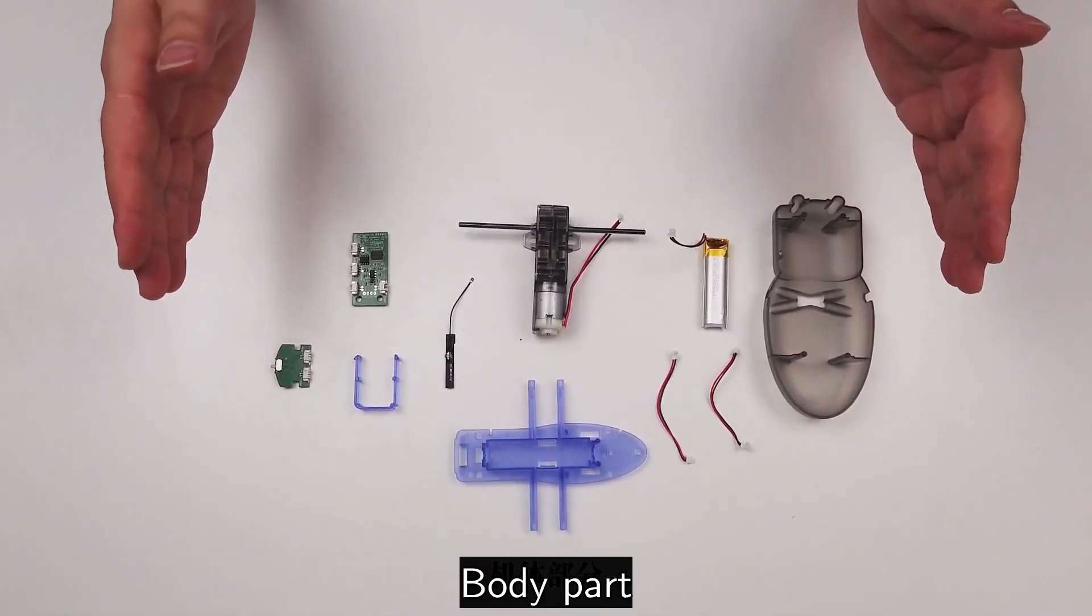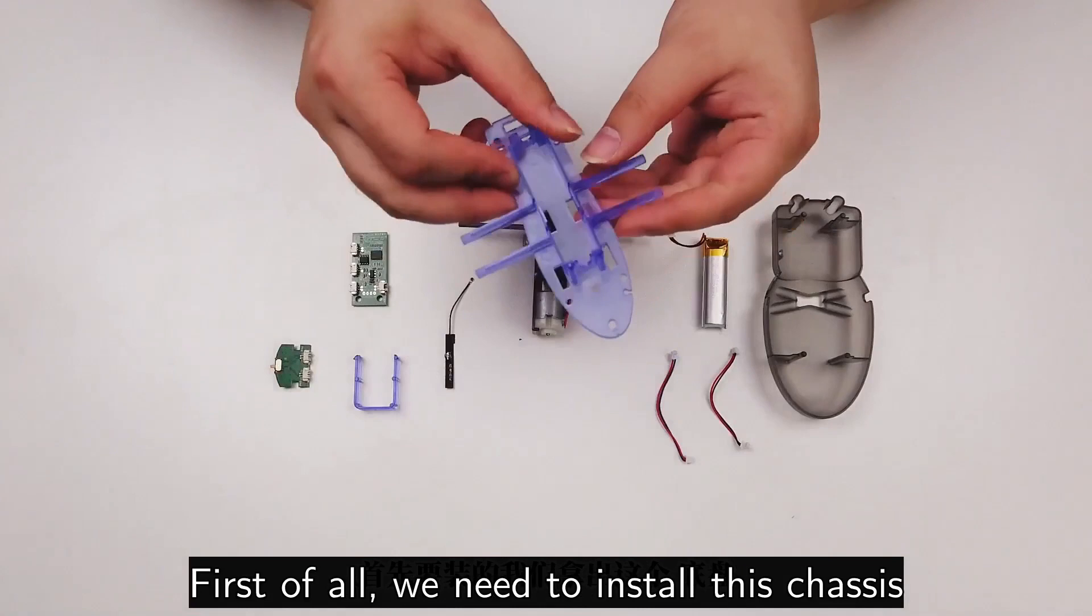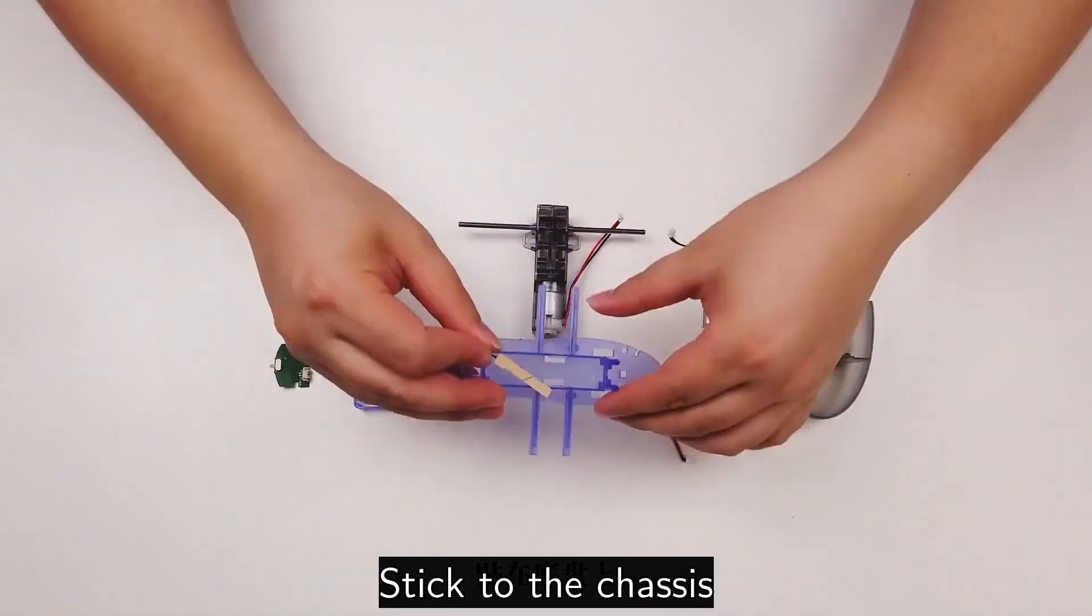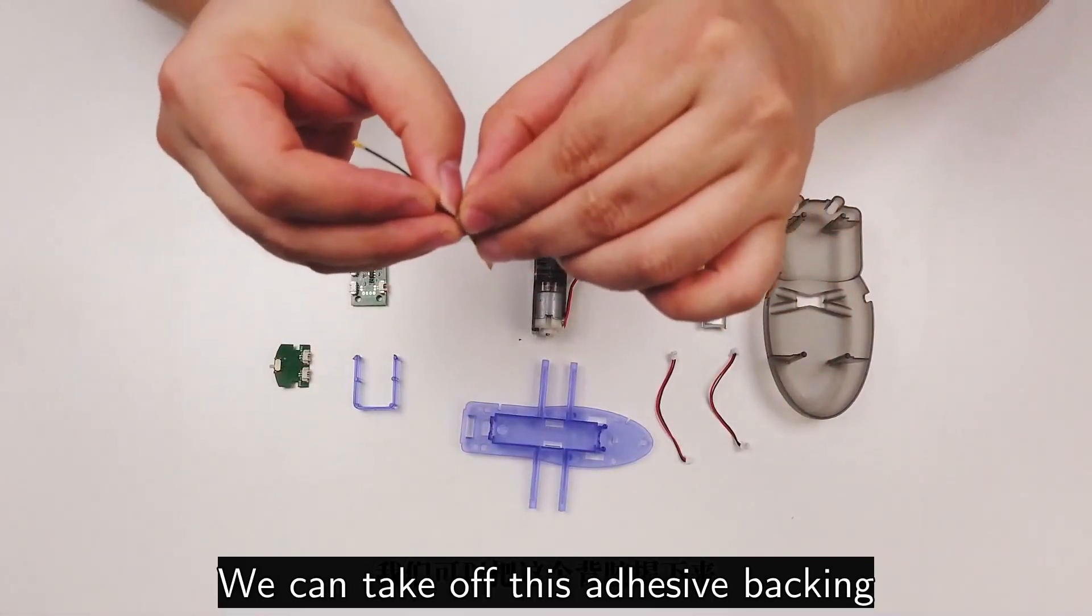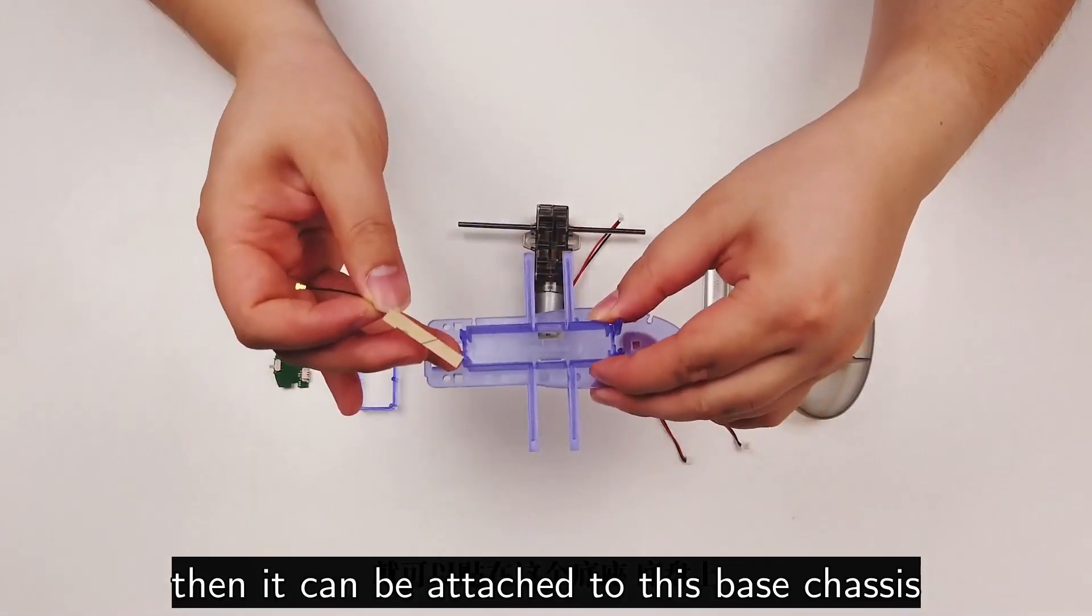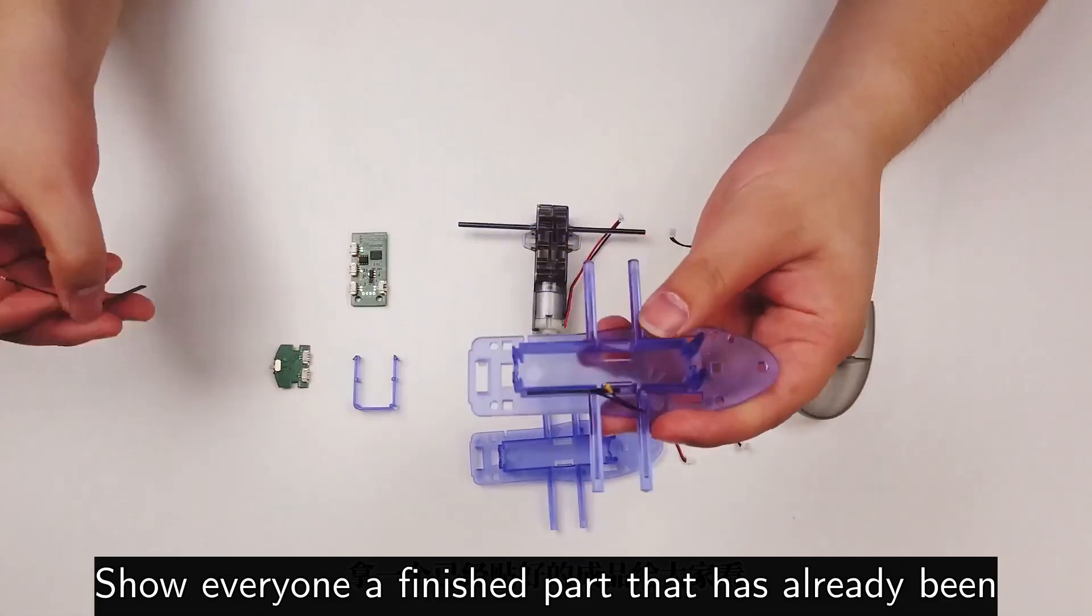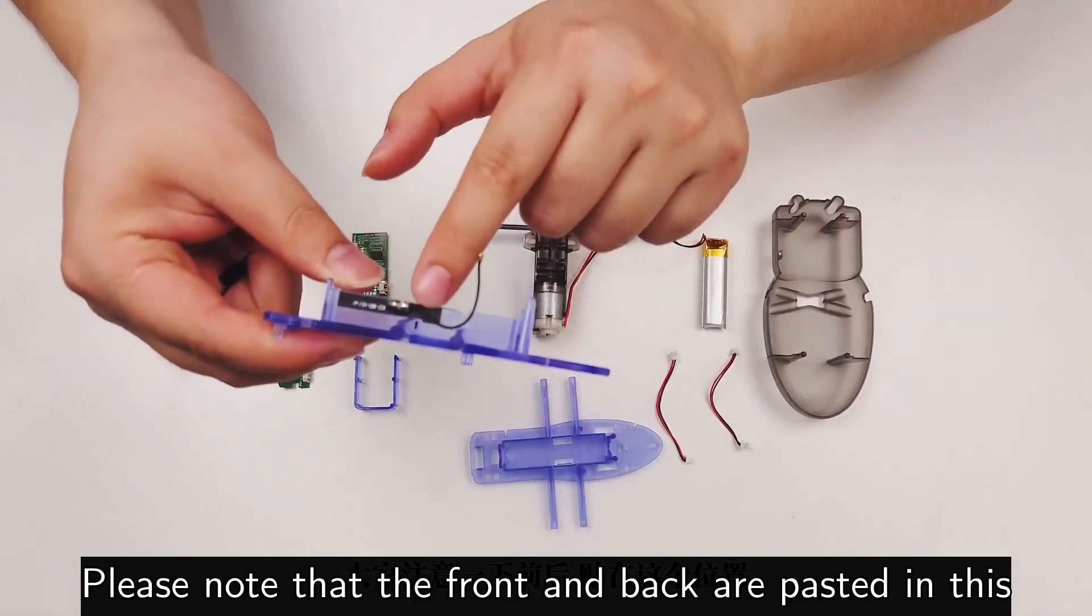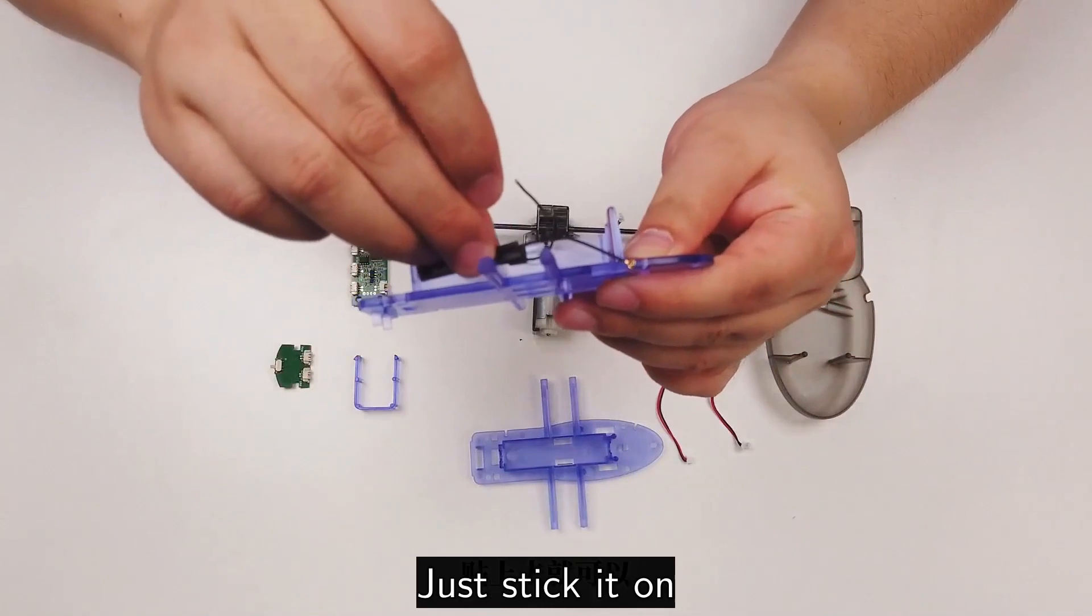The first thing we need to assemble is the body part. This is the main part of the entire robot. First, we need to install this chassis. The first step is to install this antenna stick to the chassis. There is double-sided adhesive tape on the back. We can take off this adhesive backing, then attach it to this base chassis. I will show everyone a finished part that has already been pasted. Just stick it in this position. Please note the front and back. Just stick it on.